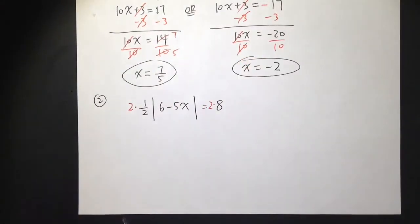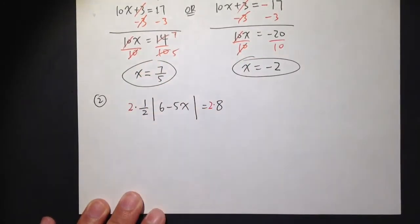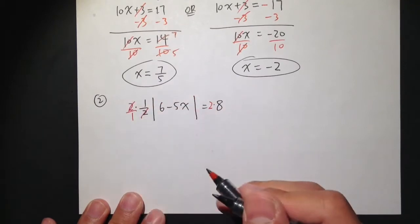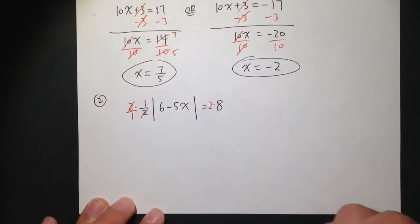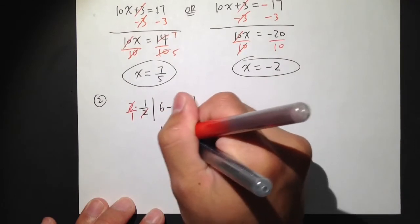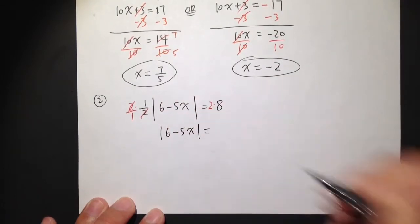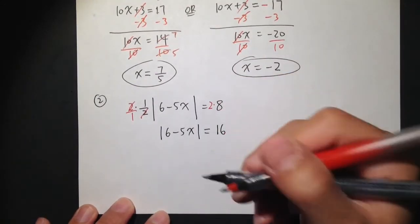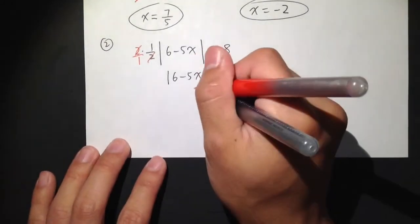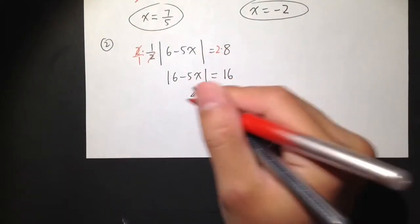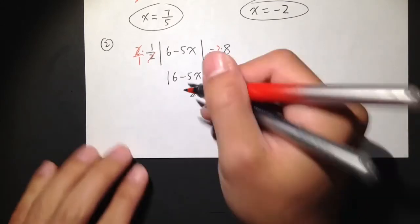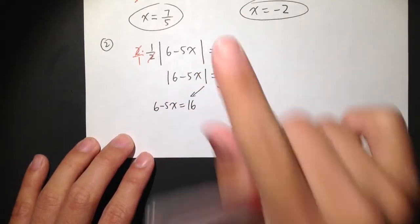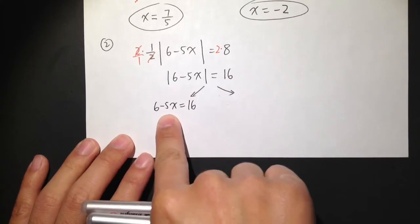Because 2 times one half — we can write 2 as 2 over 1 — the 2s cancel and we are left with just 1. So we get the absolute value of 6 minus 5x equals 2 times 8, which is 16. Then we can do the same procedure as before and break this equation into two different equations.